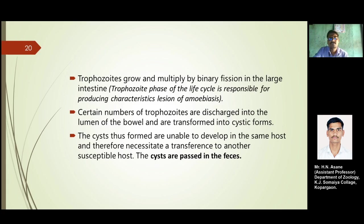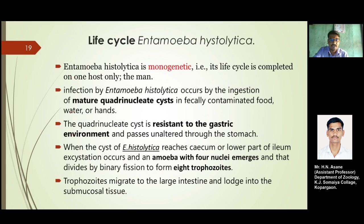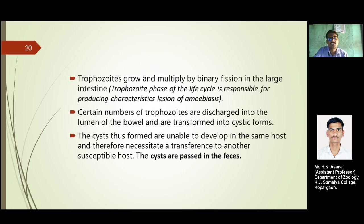The trophozoite phase of this life cycle is responsible for producing the characteristic lesions of amoebiasis — simply the ulcers of the intestine. A certain number of trophozoites are discharged into the lumen and then transformed into the cystic form within the lumen cavity of the digestive tract itself. These cyst forms are unable to develop further in the same host.